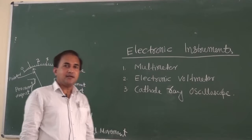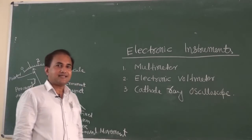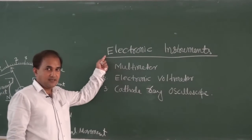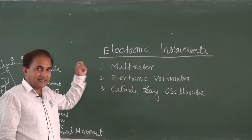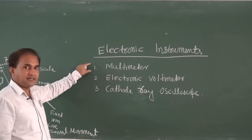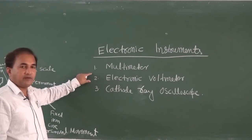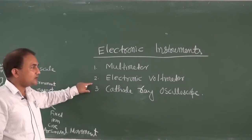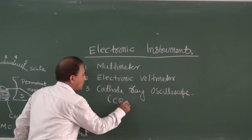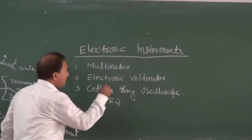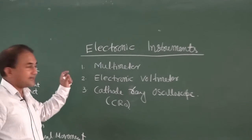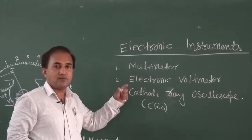Hello to everyone. In this class we will study about electronic instruments. In electronic instruments we will study about multimeter, electronic voltmeter, and cathode ray oscilloscope, also known as CRO. First of all, we will have to understand about electronic instruments.